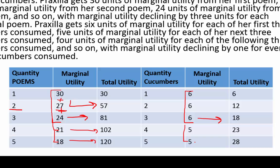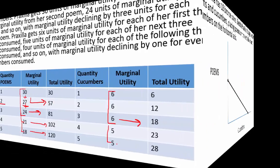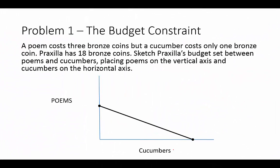The next question is: in order to figure out our utility-maximizing point, we need to know the budget side of things. Poems cost us 3 bronze coins each, and a cucumber costs only 1 bronze coin each.